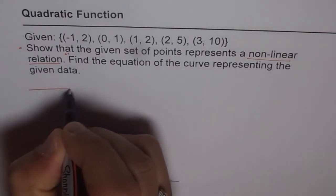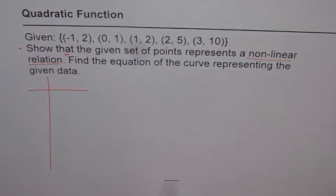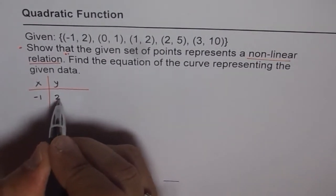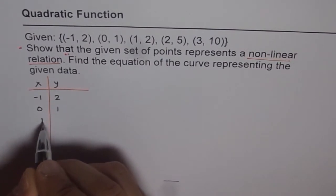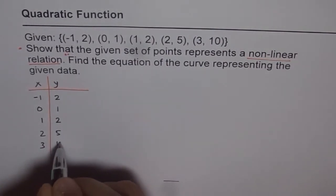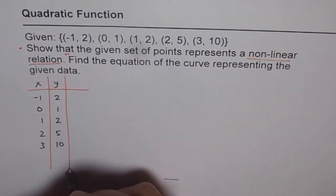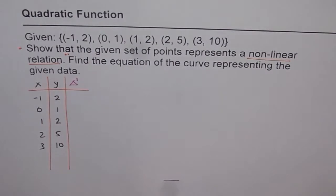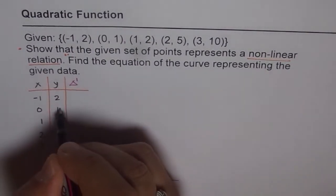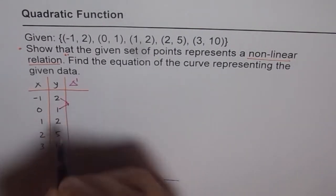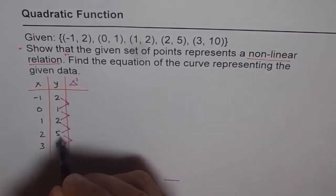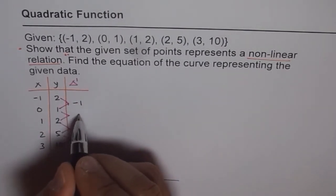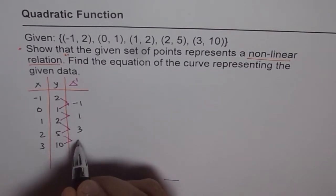I list the values here and then we find the finite difference. The x and y values given to us are: (-1, 2), (0, 1), (1, 2), (2, 5), and (3, 10). Finite difference means we do y2 minus y1. Let's call this table delta 1, representing first finite difference. So we calculate: 1 minus 2 is minus 1, 2 minus 1 is 1, 5 minus 2 is 3, and 10 minus 5 is 5.